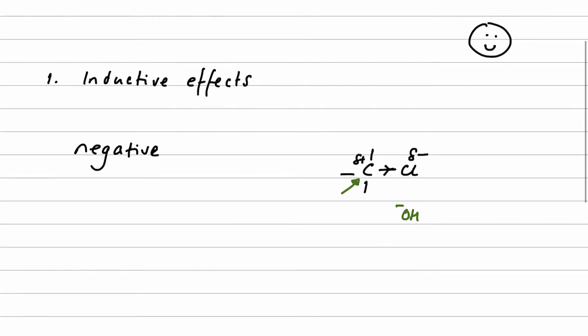Another example of a negative inductive effect we see in a carboxylic acid, for example. So let's take ethanoic acid.